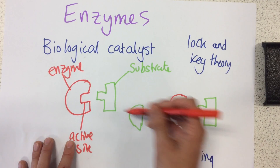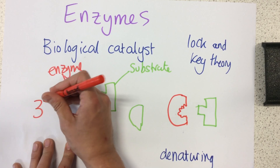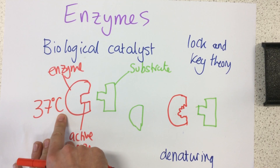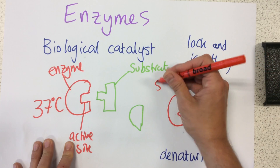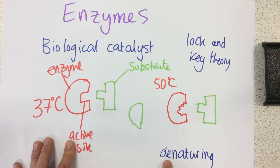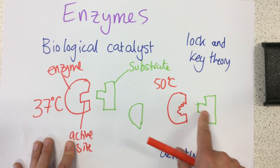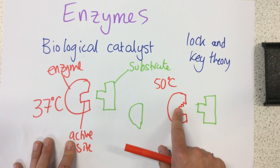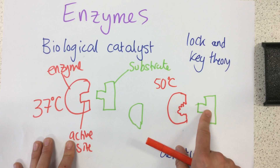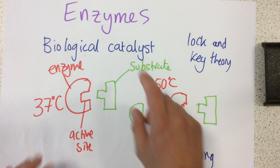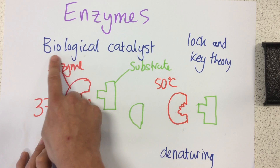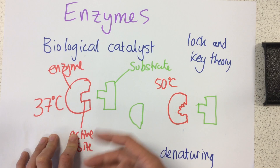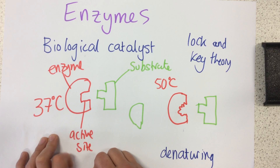Enzymes in the body work best at around 37 degrees C because that's body temperature. If it gets too hot — say around 50 degrees C — the enzyme will start to denature and will no longer be able to break down the substrate. A classic real-world example of enzymes at work is in digestion, breaking down your food.